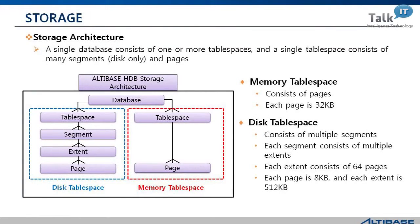Now we're going to talk about the storage architecture of Altabase HDB. The term HDB stands for hybrid database, which basically means the combination of a memory database and a disk database. We use disk area for large capacity data storage, and memory area for high performance data processing — using disk and memory together from one single database engine. That's why it is called hybrid.